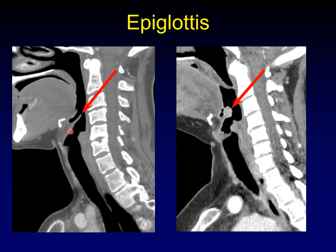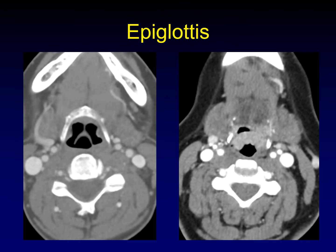If this is the normal size of the epiglottis — just a thin object sticking up — here's what the epiglottis looks like when it becomes thickened and affected by cancer. This is a cancer exclusively within the epiglottis, with no spread down to the rest of the larynx. Here's what this looks like in the axial plane: the epiglottis is supposed to be a thin line sitting in the oropharynx, but look how thick it is when infiltrated by tumor. It has the same configuration as the normal epiglottis, but is way too thick and way too enhancing.